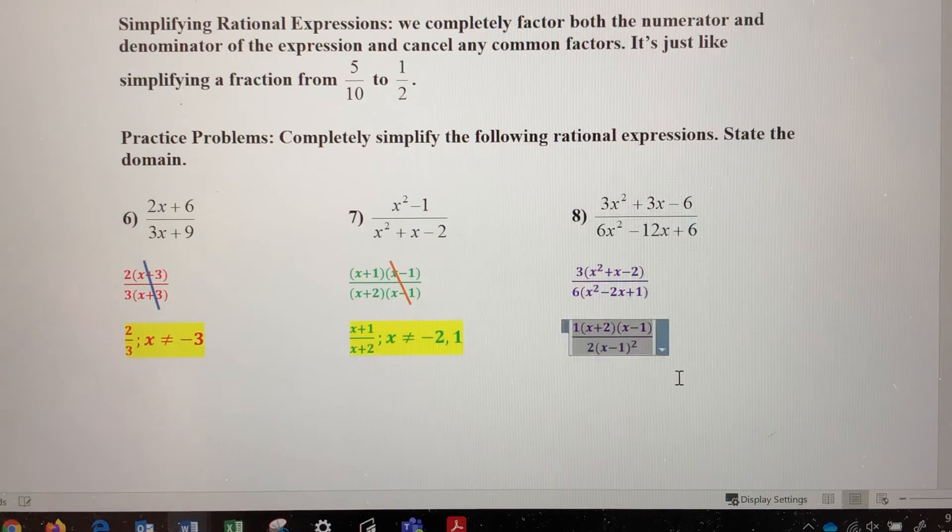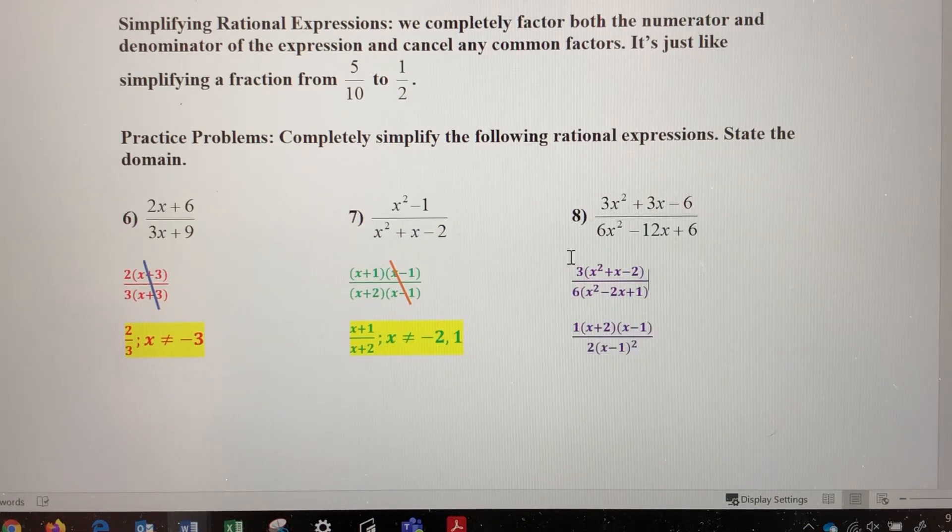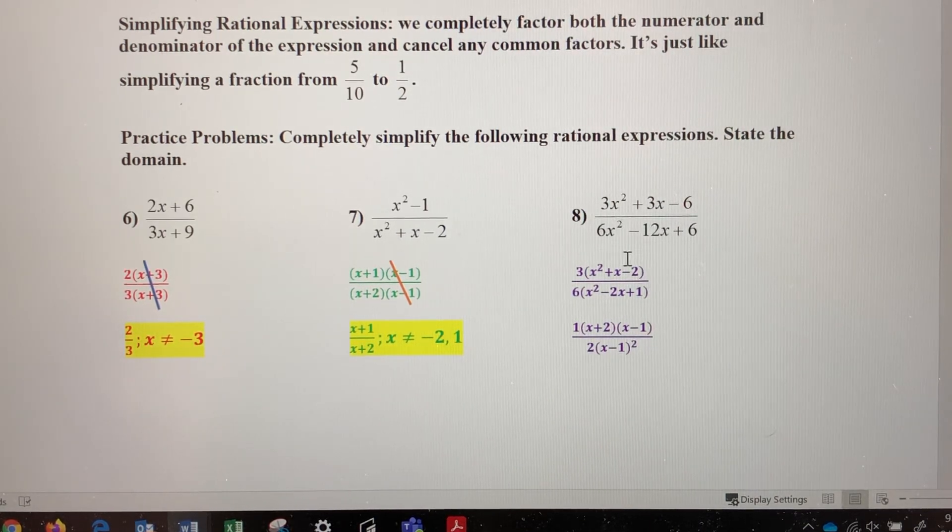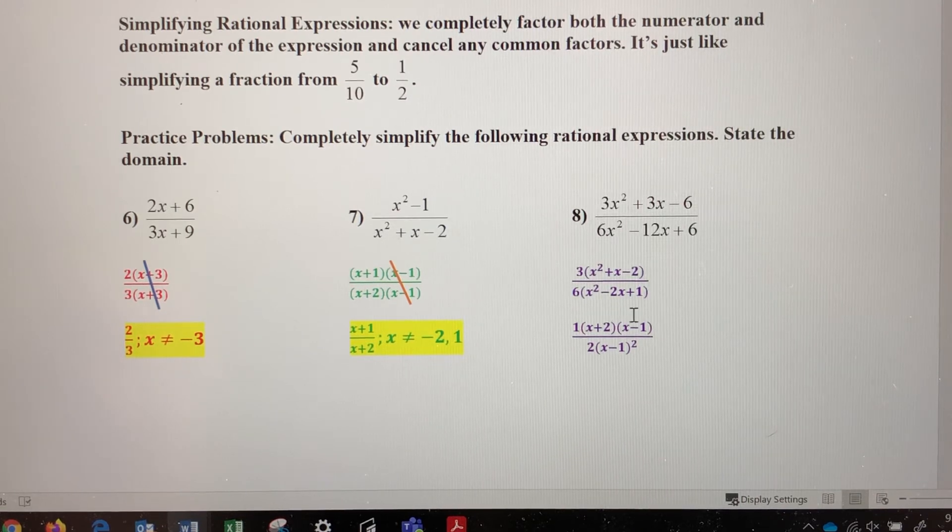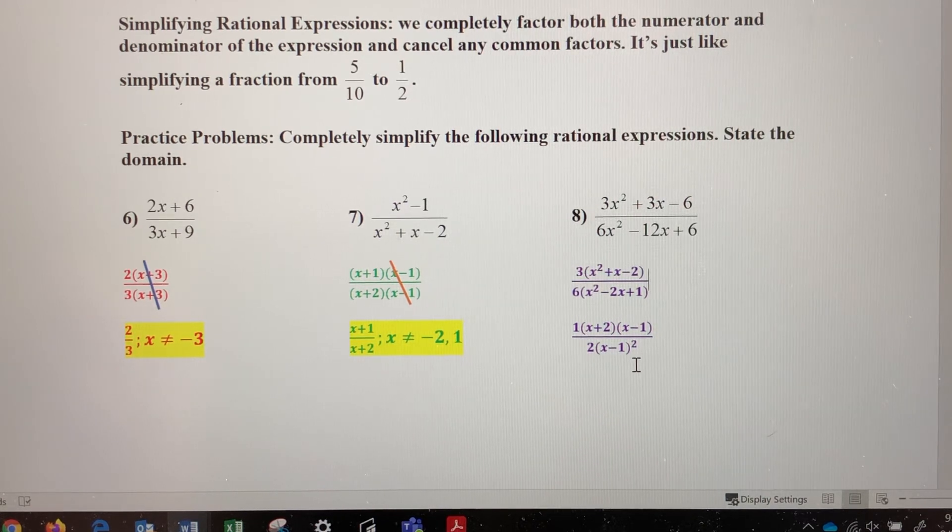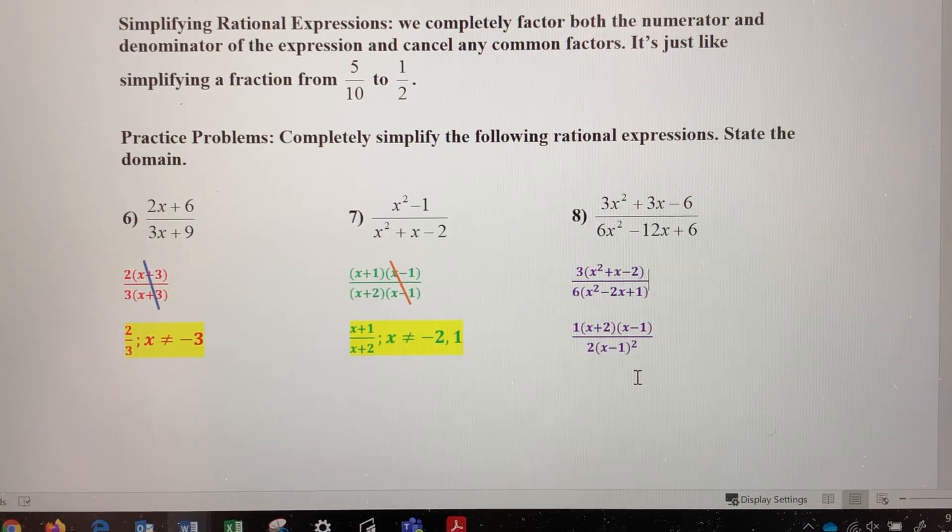So when I factor, I get, first off, 3 over 6 simplifies to 1 over 2. This trinomial factors to x plus 2, x minus 1. And this was a perfect square trinomial, which factors to x minus 1 to the second power.